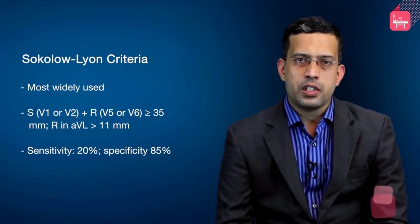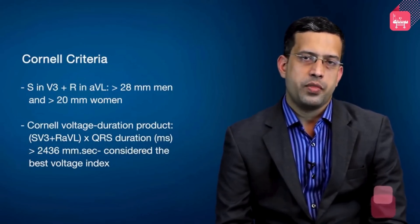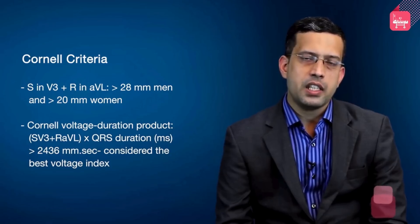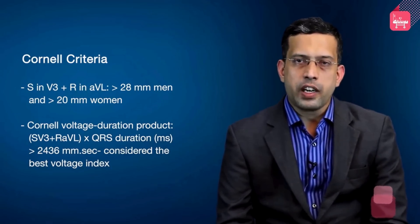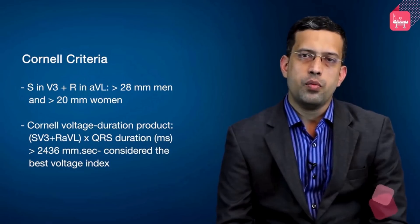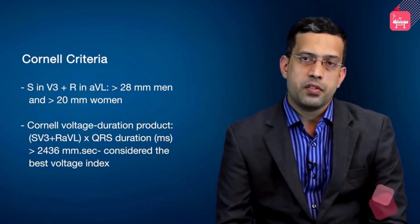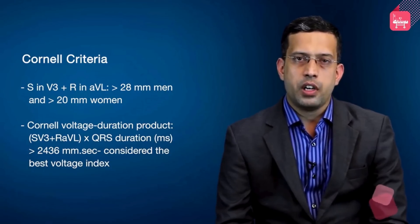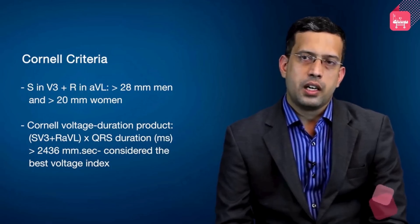The sensitivity of the Sokolov-Leon criterion is about 20% and specificity about 85%. Another widely used criterion is the Cornell criteria, which combines S wave in V3 plus R in AVL. This is gender-specific: it exceeds 28 mm in men or 20 mm in women to be diagnostic of LVH. A further refinement is the Cornell voltage duration product, which multiplies the same voltage (SV3 plus R in AVL) by the QRS duration, with a cutoff of 2,436 mm·ms considered diagnostic of LVH.